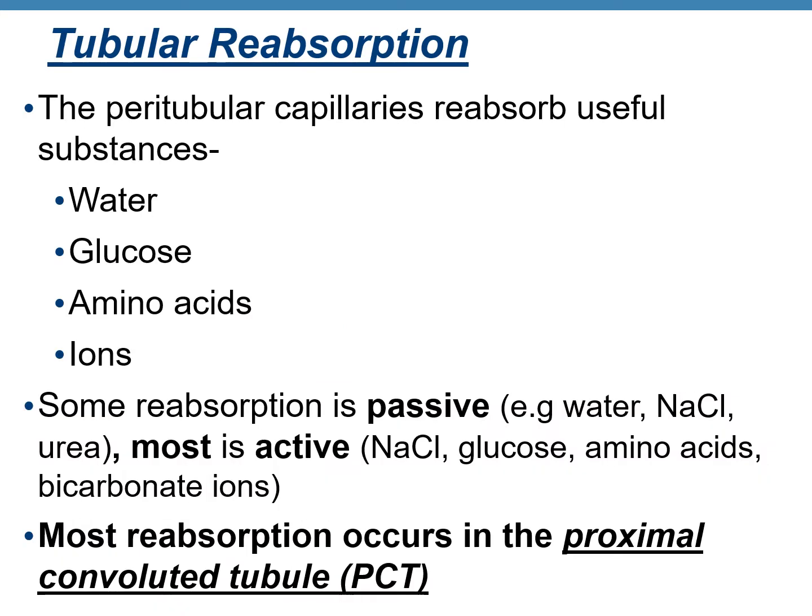The second step is tubular reabsorption, which means the peritubular capillaries reabsorb or reclaim useful substances from the filtrate. These useful substances include water, glucose, amino acids, ions, etc. Some reabsorption can be passive, but most is active. Most of the reabsorption occurs in the first part of the renal tubule right after the Bowman's capsule — that means it occurs in the PCT or proximal convoluted tubule.